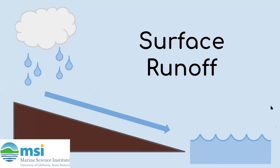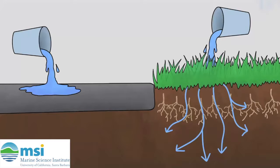As you may have learned, surface runoff is when water is not absorbed by the ground, but instead flows over the surface of the earth. The movement of surface runoff is directed by gravity. But why does water not absorb into the ground? If you were to pour a glass of water onto the sidewalk, and then another glass onto the grass, what would happen?